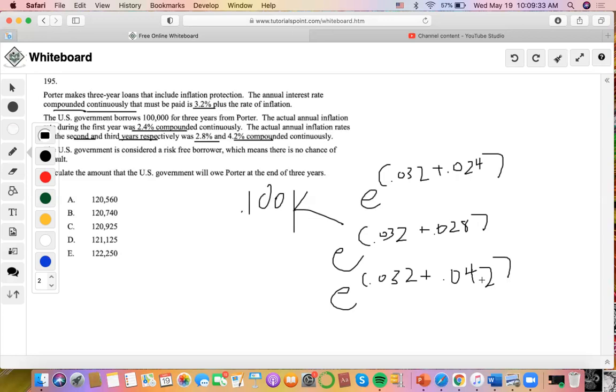This is 1.209 times 100,000. It's going to be 1.924, which will make C the answer.